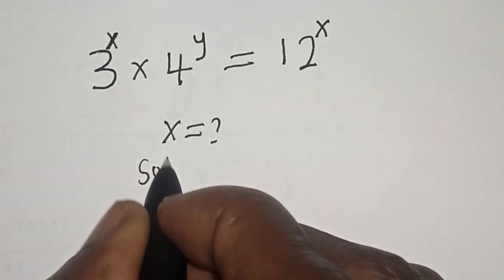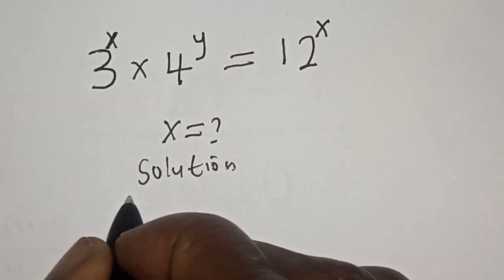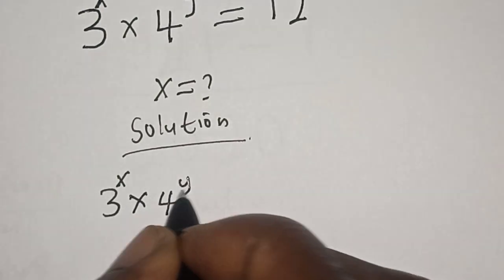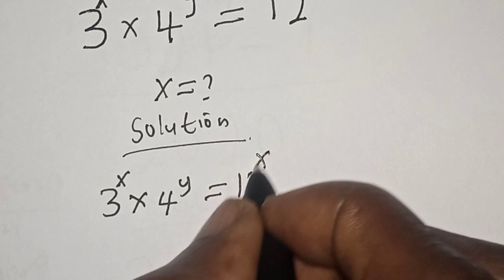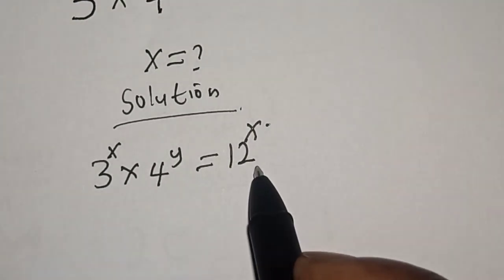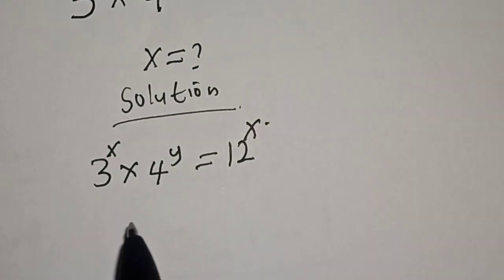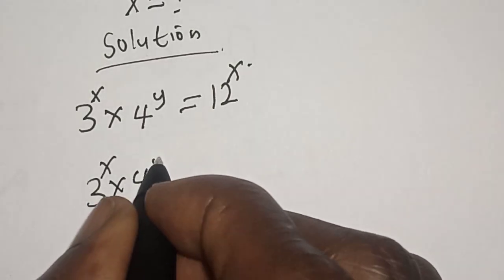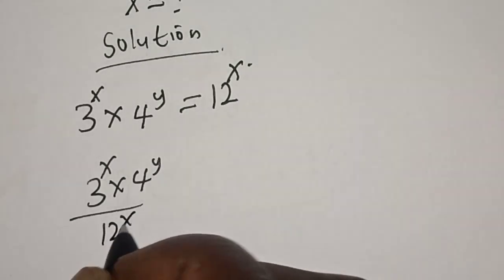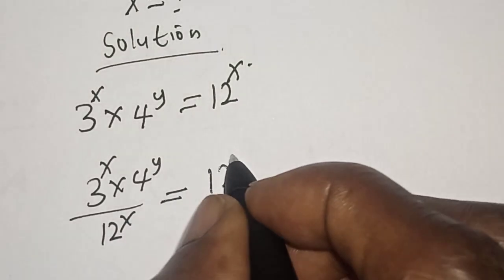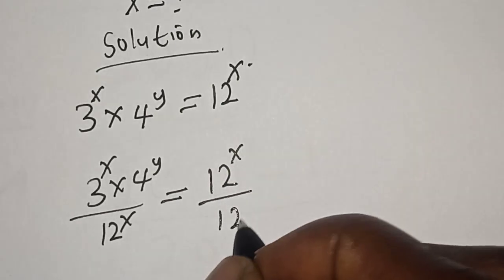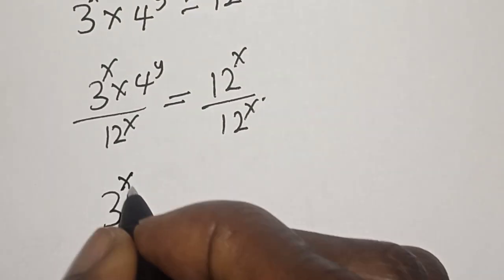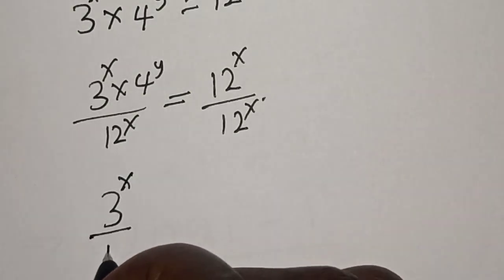Solution: we have our given equation — 3 raised to power s multiplied by 4 raised to power y is equal to 12 raised to power s. This is the left hand side and here is the right hand side. Let's divide both sides by 12 raised to power s. Then we have 3 raised to power s multiplied by 4 raised to power y, over 12 raised to power s, is equal to 12 raised to power s over 12 raised to power s.